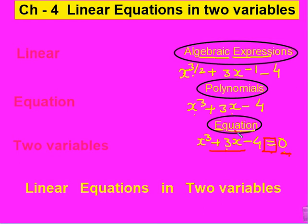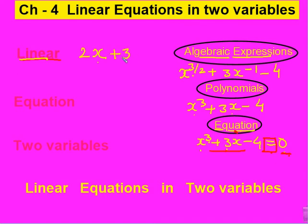यहाँ से हम अपने chapter को correlate करते हैं। Chapter में equation word use हो रहा है, इसलिए हमने इसे previous chapter से relate करके revision किया। Now, come to the words of the particular chapter. First is 'linear' — linear word का initial 'line' से बना है। Line means अगर हम इसका graph बनाएं तो एक straight line बनेगी, और variable की power one होगी। Example: 2x, जहाँ variable की power one है।